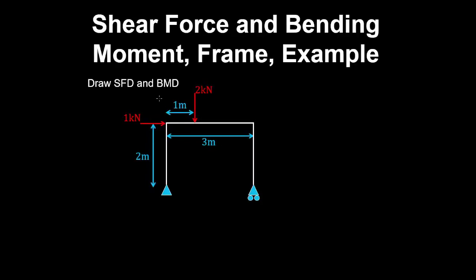Let's draw the shear force and bending moment diagram for this frame. Well, our roller does not have a horizontal reaction, so only the pin is going to resist that horizontal 1kN load by horizontal equilibrium of forces.